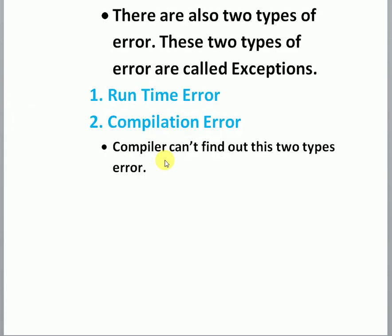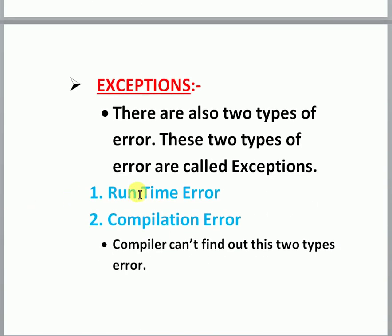What is an exception? Exceptions are of two types: runtime errors and compilation errors. These are types of errors that the compiler cannot find. So these types of errors are called exceptions. Syntax errors the compiler can easily detect, but runtime errors and compilation errors it cannot detect. These two types of errors are called exceptions. I will discuss these topics more clearly in another video.